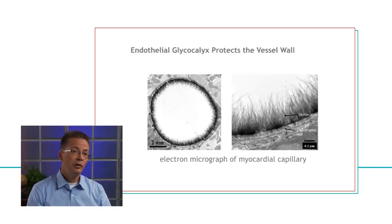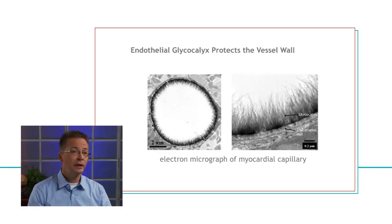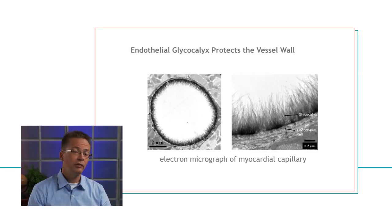The glycocalyx is produced by the vessel wall itself and consists of polysaccharides to which proteins and fluid bind, making a gel. As you can see on the slide, the dimension of the glycocalyx is much larger than the thickness of the wall itself. So it forms a significant compartment shielding the vessel wall from direct contact with the flowing cells and high-fat substances in the bloodstream.